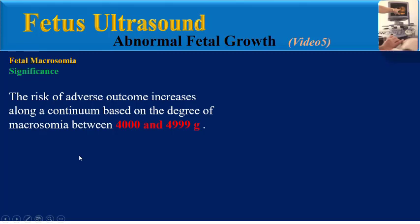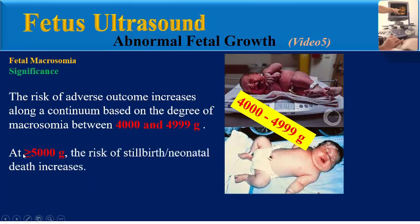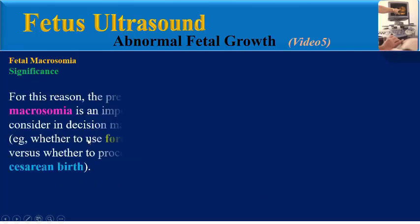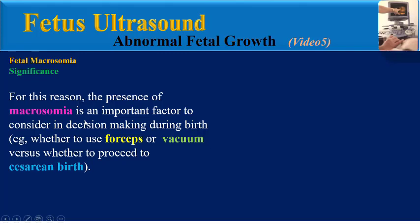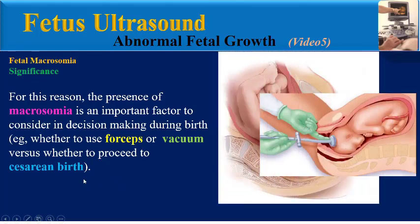The significance of pregnancy with fetal macrosomia: The risk of adverse outcome increases along a continuum based on the degree of macrosomia between 4,000 to 4,500 grams. At more than 5,000 grams, the risk of stillbirth and neonatal deaths increases. For this reason, macrosomia is an important factor in decision-making during birth — for example, whether to use forceps or vacuum versus proceeding to caesarean delivery.